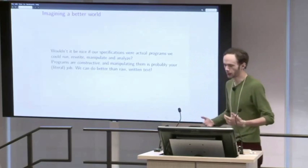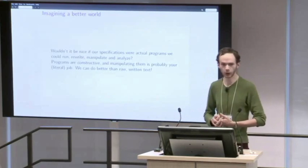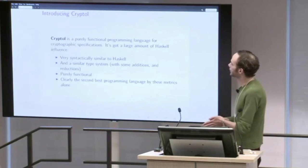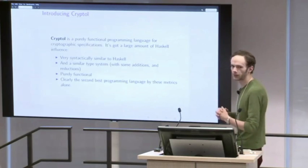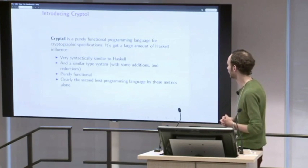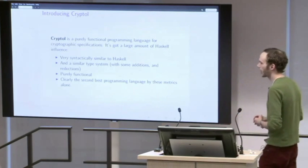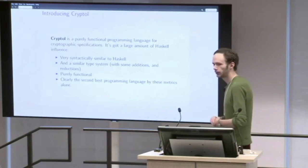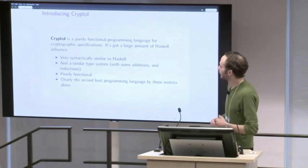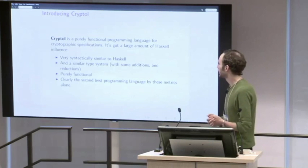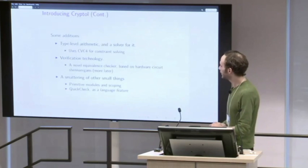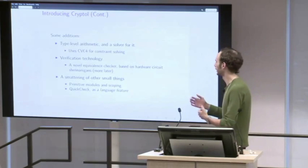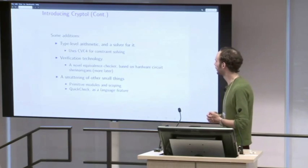Programs are something we write, run, and analyze — they're constructive, and manipulating them is most likely the job of many of you in this room. So we can do a lot better than raw text. And that is where Cryptol comes in. It's a purely functional programming language primarily for cryptographic specifications. If you know Haskell, it will look very, very familiar — it is heavily based on it. The implementation is written in Haskell and it is written by Galois. It has a very similar type system and is purely functional.